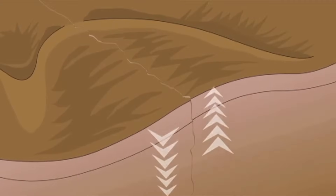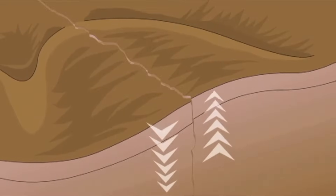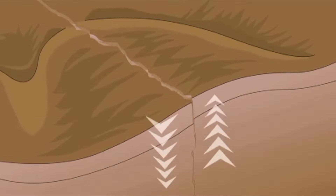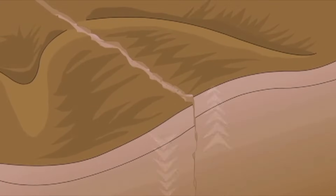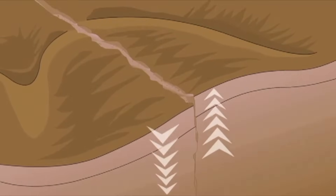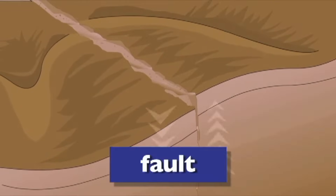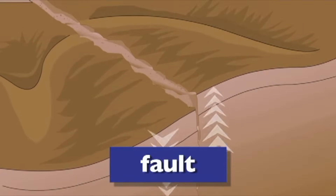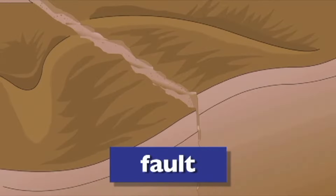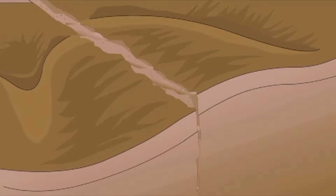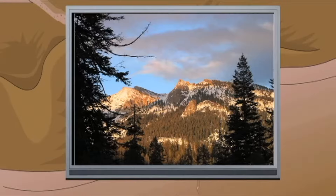Sometimes when the Earth's plates collide with each other, one plate gives way because the crust is weak. The place where the crust is weak is called a fault. That's how fault mountains are formed. The Sierra Nevada mountains are an example of fault mountains.